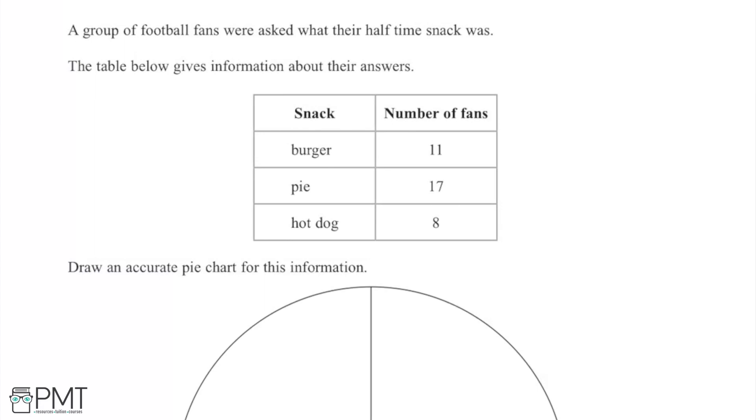So here I'm told that a group of football fans were asked what their half-time snack was. And then we have the table below which gives information about their answers. So the three options for snack were burger, pie and hot dog, and then in the right hand column we have the number of fans that chose these as their favourite snack. So 11 for burger, 17 for pie and 8 for hot dog.